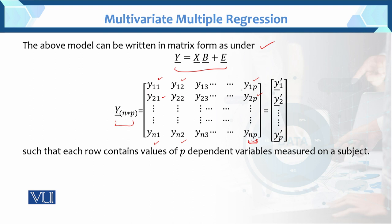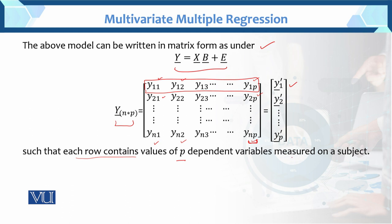The first column of values is called y1-prime, forming one vector. The second column is called y2-prime, and the last is called yP-prime. Such that each row contains values of P dependent variables measured on a subject. So now we know what the Y matrix contains — its order is n × p. Similarly, we will now check the order of X, B, and E.